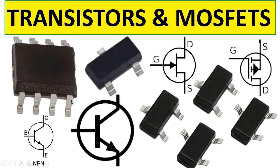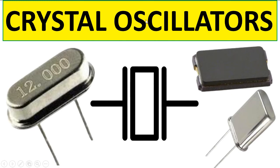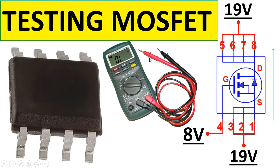These are crystal oscillators. This component provides a stable frequency to the motherboard and is a very important component. You will typically find the crystal oscillator located near the clock generator, near the ICH, or near the Super I/O chip.